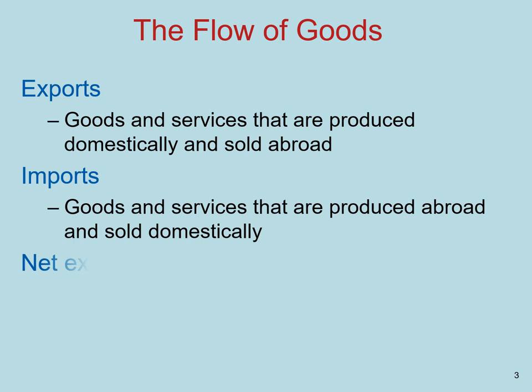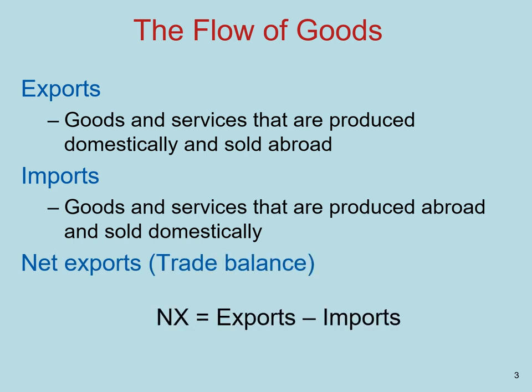To understand an open economy, we first need to understand how we measure the flow of goods and services across borders. Exports are goods and services produced domestically and sold abroad. Imports are the goods and services that are produced abroad and sold domestically. The value of net exports, or what we call the trade balance, is the difference between the value of exports and imports, and that is how we measure economic activities across borders.